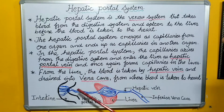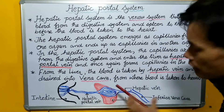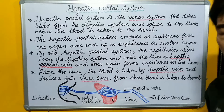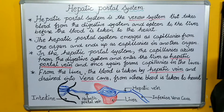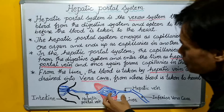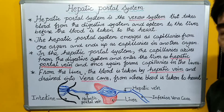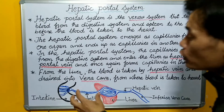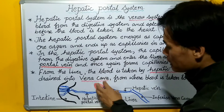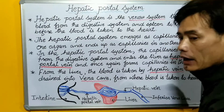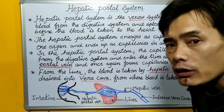For example, glucose will be absorbed by the liver and will be stored in the form of glycogen.